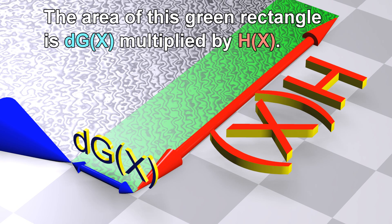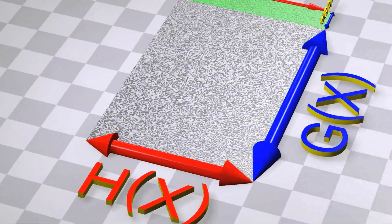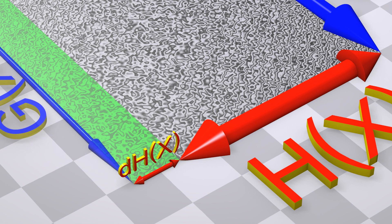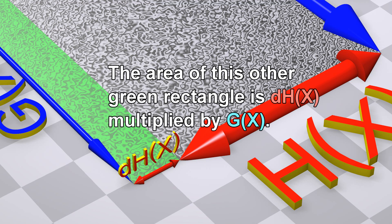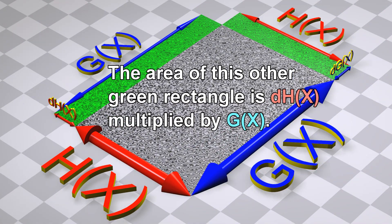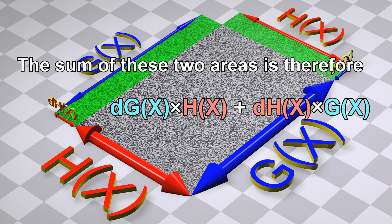The area of this green rectangle is dg multiplied by h. The area of this other green rectangle is dh multiplied by g. The sum of these two areas is therefore dg multiplied by h, plus dh multiplied by g.